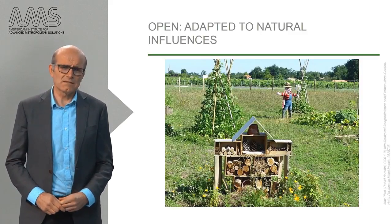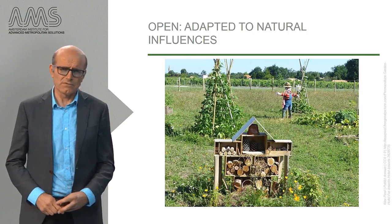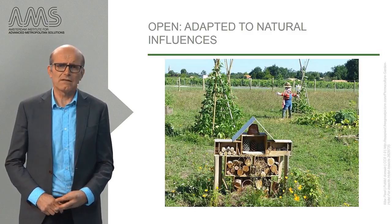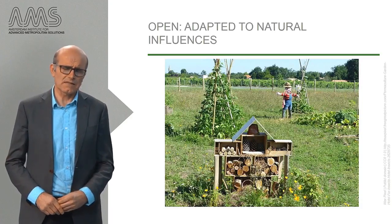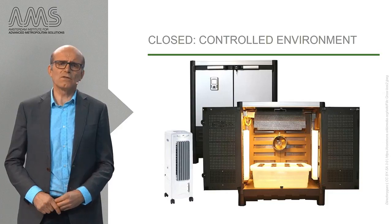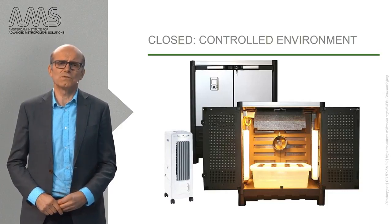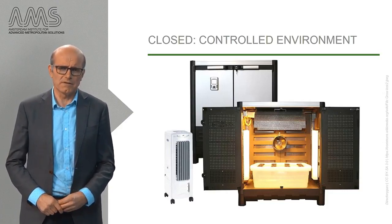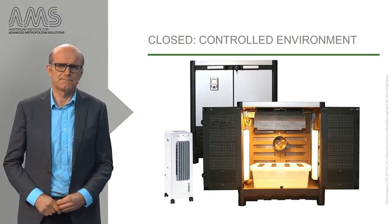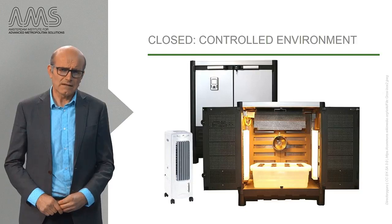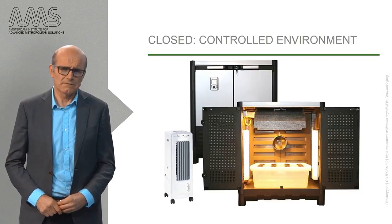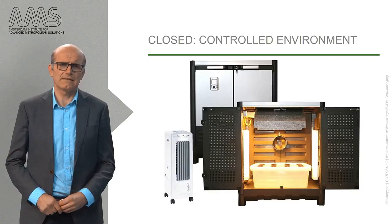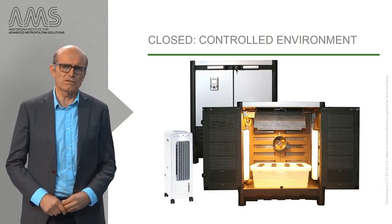An open system is a system that is adapted to natural influences. For example, a permaculture garden or snake-shaped wall where grapes can grow in the heat that is captured by the wall. We speak of a closed system when food is produced in a completely controlled environment, where natural influences are blocked or managed. An example are the so-called growing cabinets, which use green technologies for lighting and for controlling the in-house climate, the temperature, and the supply of water and nutrients.